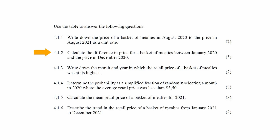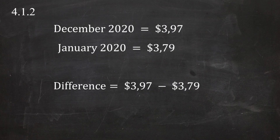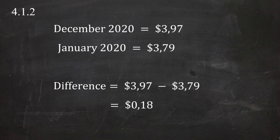In question 4.1.2, you have to calculate the difference in the price for a basket of mealies between January 2020 and December 2020. From the table, the price in January 2020 was $3.79 and in December 2020 was $3.97. The difference is $3.97 minus $3.79, which equals $0.18.